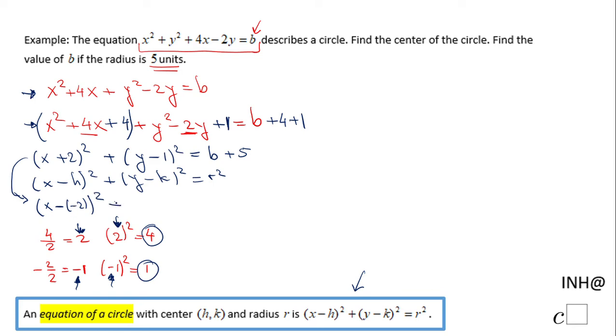So (x - (-2))² + (y - 1)² equals B + 5. And now we can look and identify: h is negative 2, k is 1. So the center is (-2, 1).